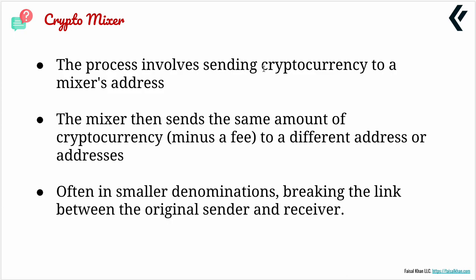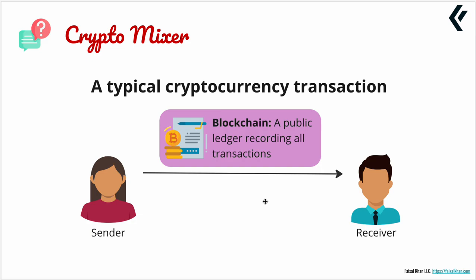The process involves sending cryptocurrency to a crypto mixer. Everything on the blockchain can be found — if I send money from here to here, the trail is all public. It's on the public ledger. If I know that a particular address belongs to the sender and another to the receiver, I can look at everything and go back and forth up and down the tree of their transactions and figure things out.